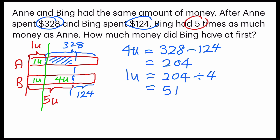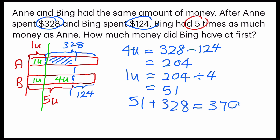And I can go ahead to answer the question by finding out how much money Bing has. I can use Anne's portion, which is 1 unit plus $328. So 1 unit — $51 plus $328 gives us $379. And that's it, the final answer.